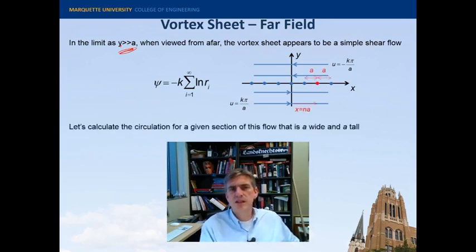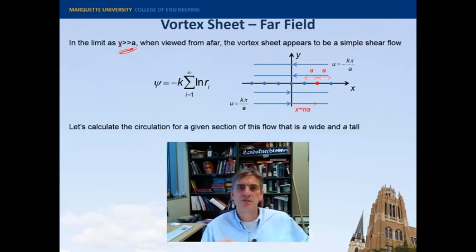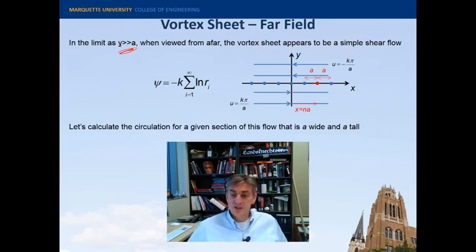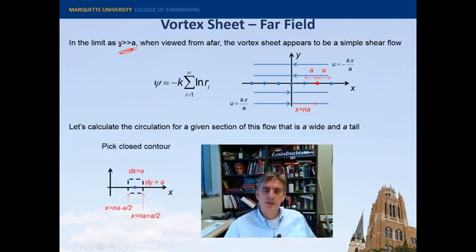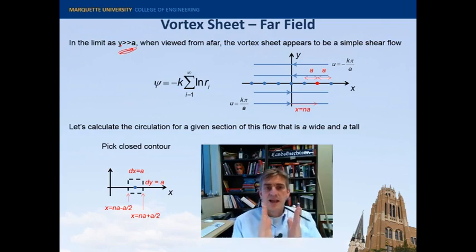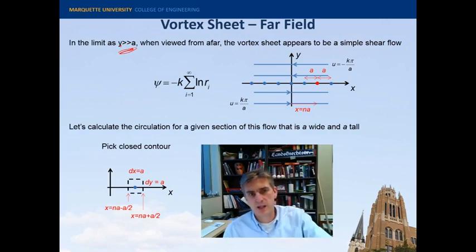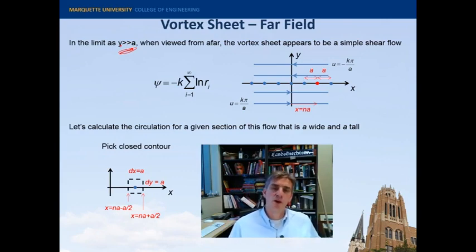So given this flow field, what we'll call the vortex sheet in the far field, let's calculate the circulation. So to do that, we're going to pick a closed contour, and I'm going to pick a contour that surrounds one of the vortices. It's going to be a square, so it'll be easy to do the line integral around that vortex. And it will have a size in the x direction that's a, and a size in the y direction that's a, and it'll be spaced such that the spacing between each vortex contains one control volume.